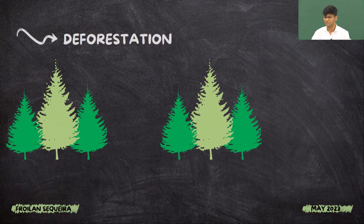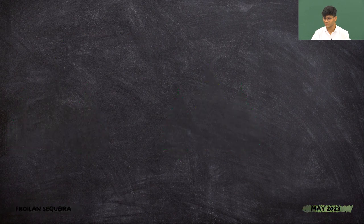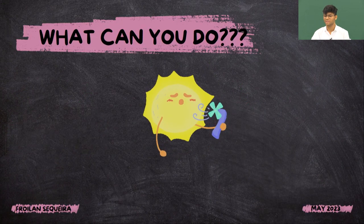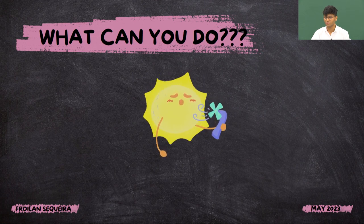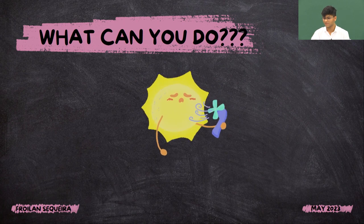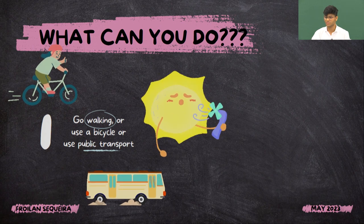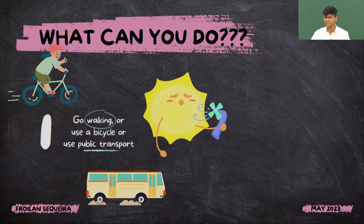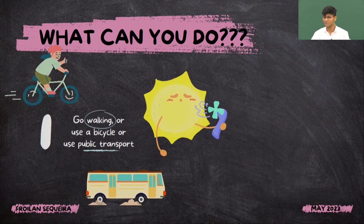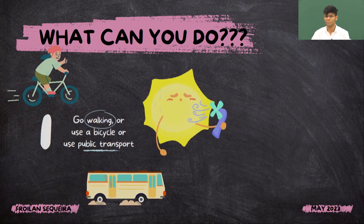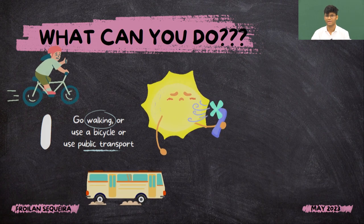Now the crucial question is: what can you do to prevent global warming? How can you save your planet? Step one is to go walking, use a bicycle, or use public transport for traveling instead of using private cars and vehicles. This will limit the emission of greenhouse gases and the burning of fuels.